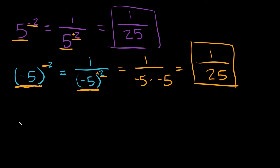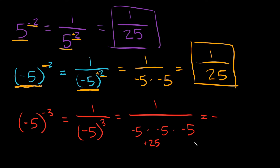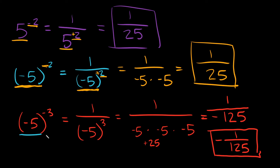With that in mind, what if we had negative 5 raised to the negative 3rd power? This equals 1 over negative 5 to the positive 3, so it's 1 over negative 5 times negative 5 times negative 5. Negative 5 times negative 5 is positive 25, and positive 25 times negative 5 is negative 125. So your answer is negative 1/125. We kept the negative 5 the same; we only changed the exponent from negative 3 to positive 3.